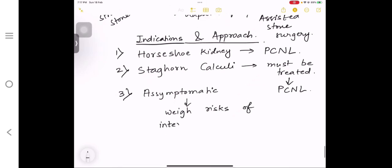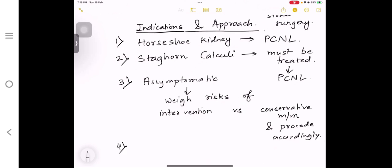Think about your x-ray, your USG, your non-contrast CT and your size. If the size is less than or equal to 1 cm, you start with ESWL because ESWL is the most minimal procedure. If that fails, you go for URS. And if that fails, you go for PCNL.